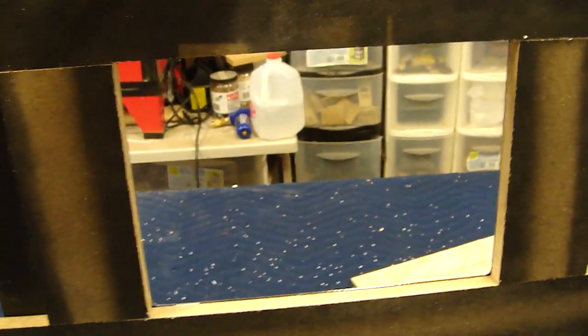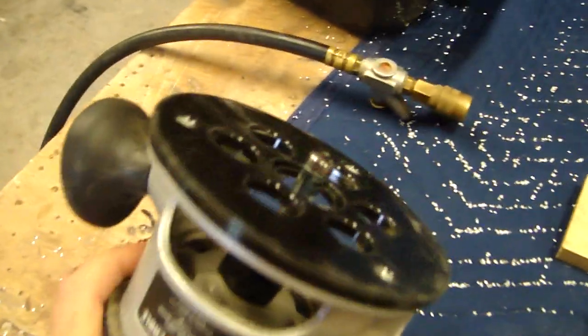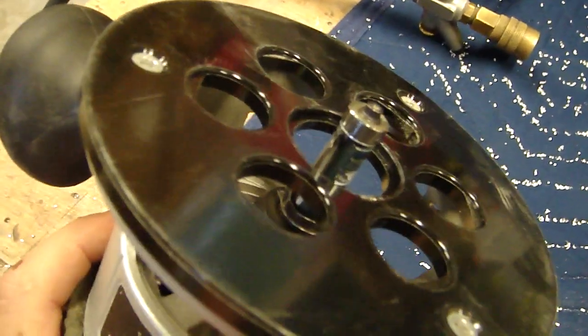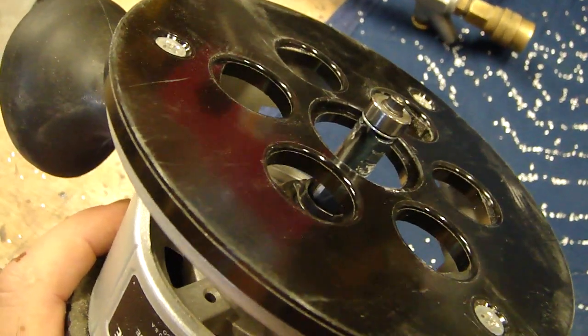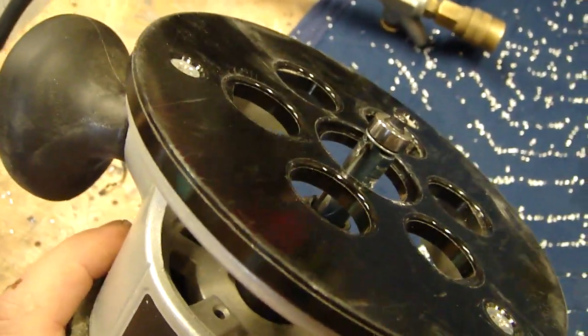From this side I drill the holes, cut it out with a Fein Multimaster. From this side I route it with a bottom bearing half-inch shank carbide flush trimming bit.